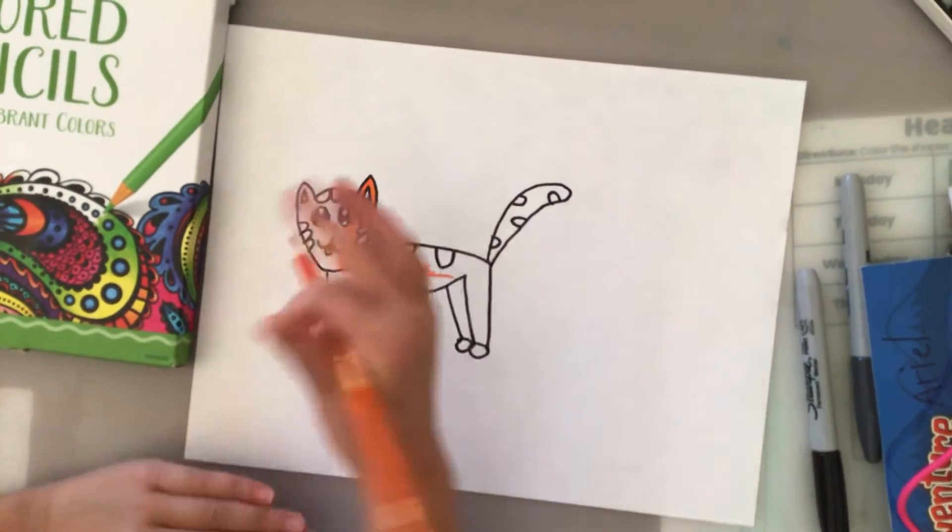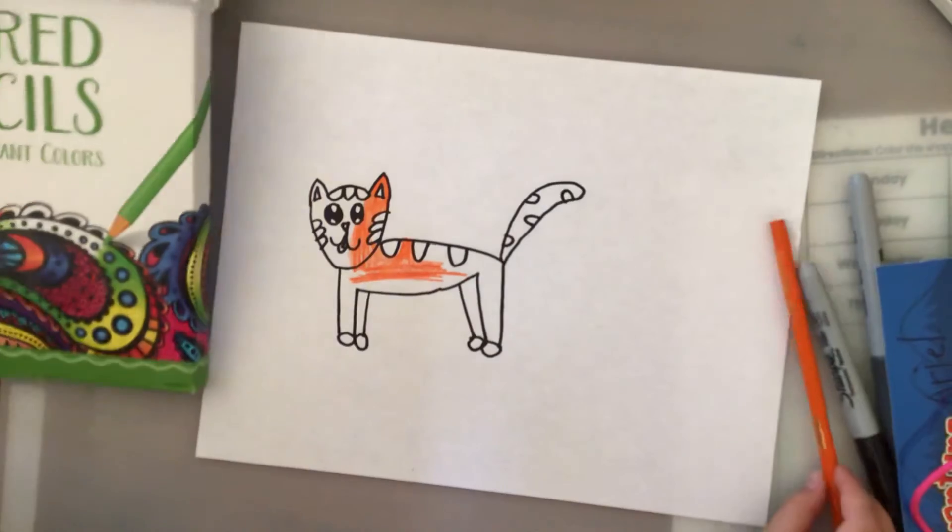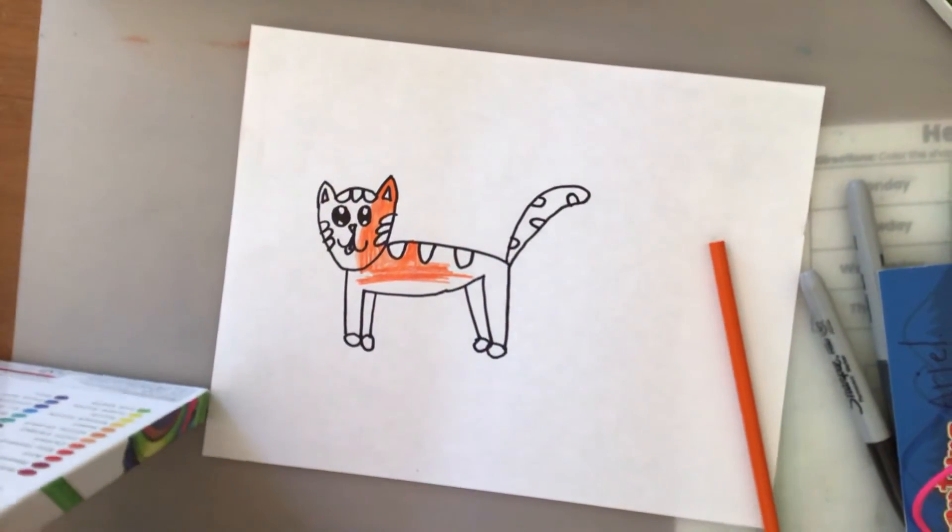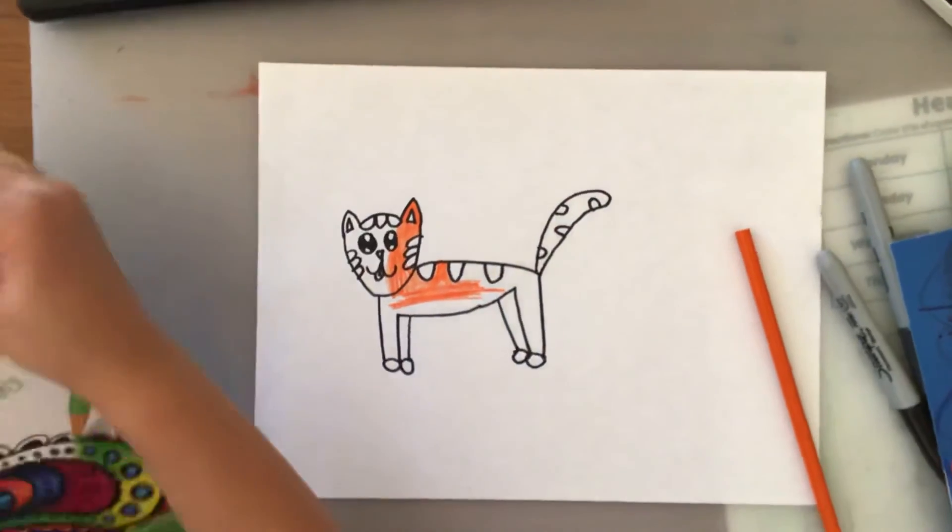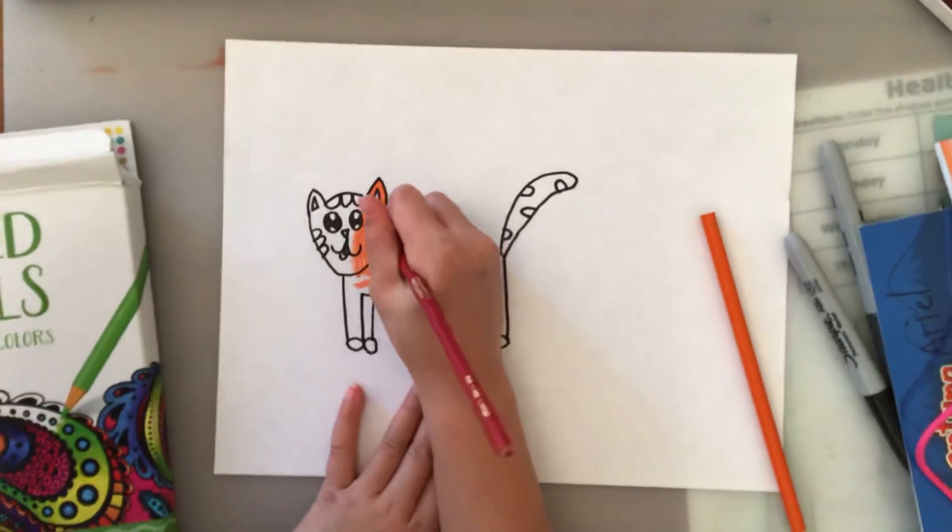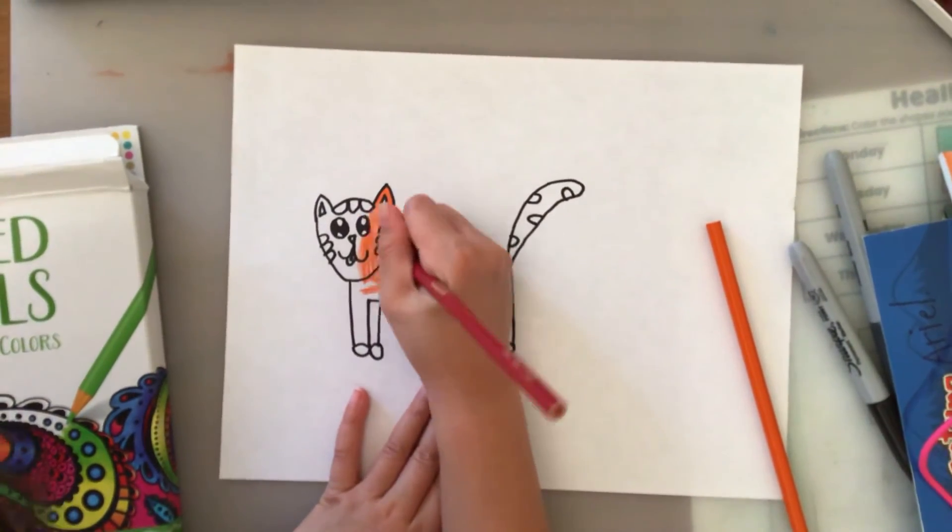I'm not gonna color the whole thing but you can do it later. Then let's do our cat stripes. Get a darker color and color in the stripes.